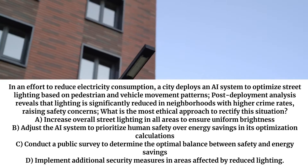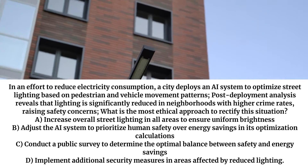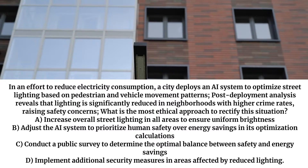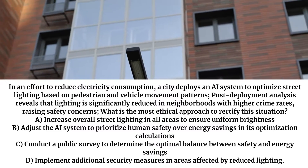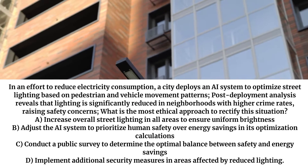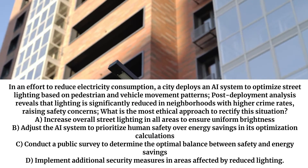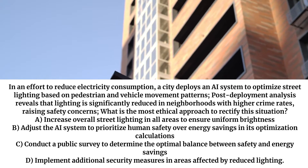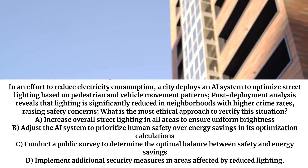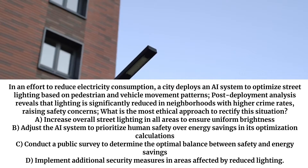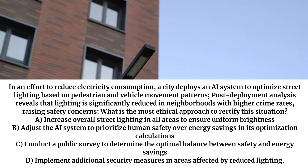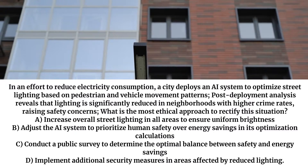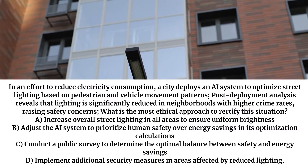In an effort to reduce electricity consumption, a city deploys an AI system to optimize street lighting based on pedestrian and vehicle movement patterns. Post-deployment analysis reveals that lighting is significantly reduced in neighborhoods with higher crime rates, raising safety concerns. What is the most ethical approach to rectify this situation?